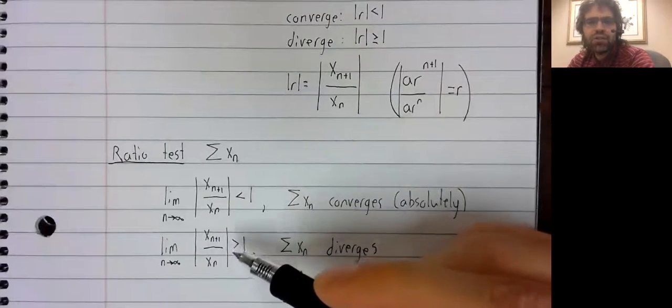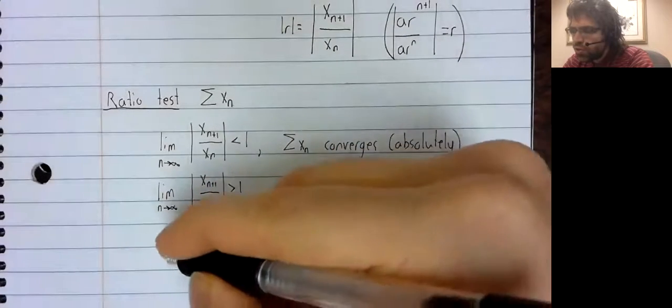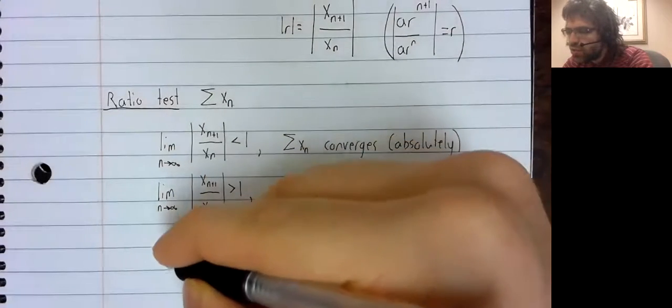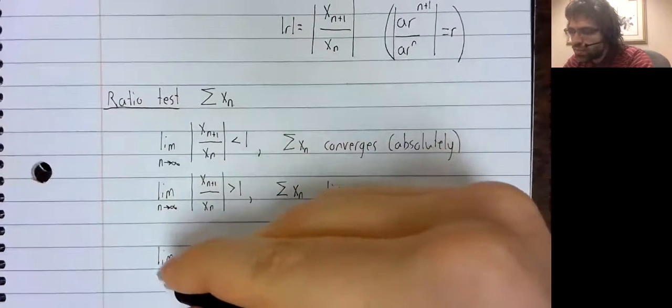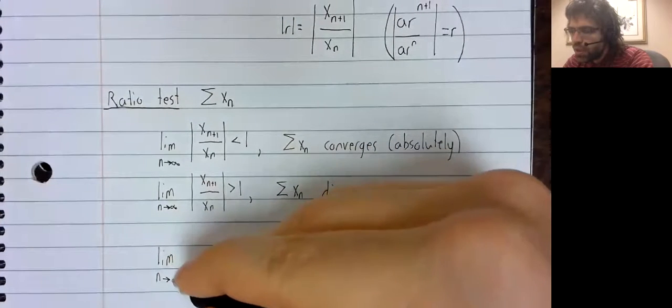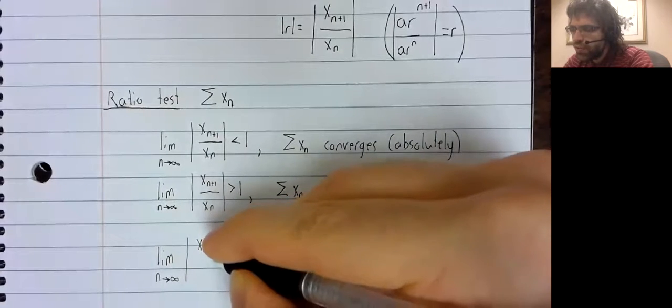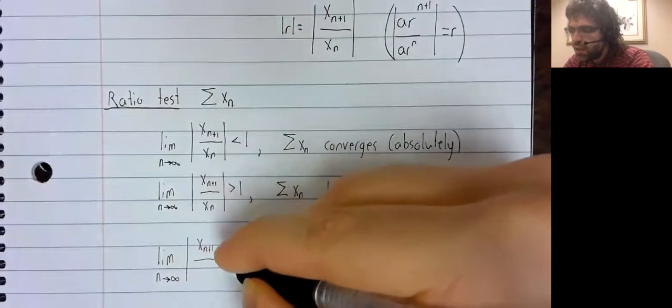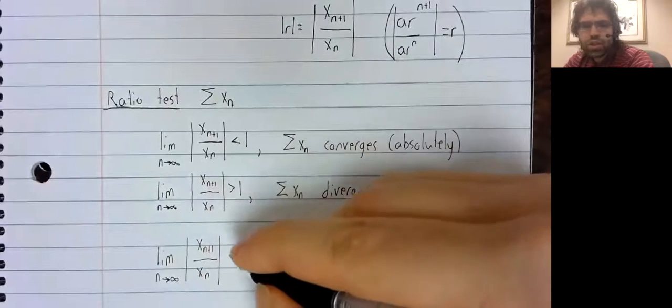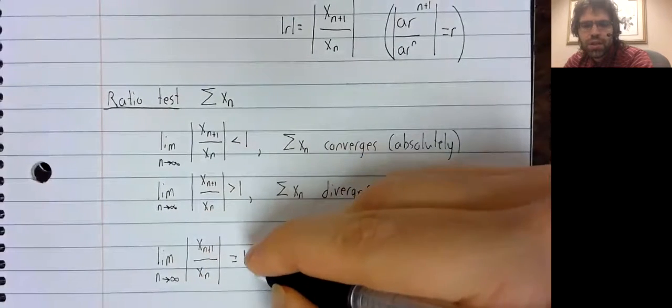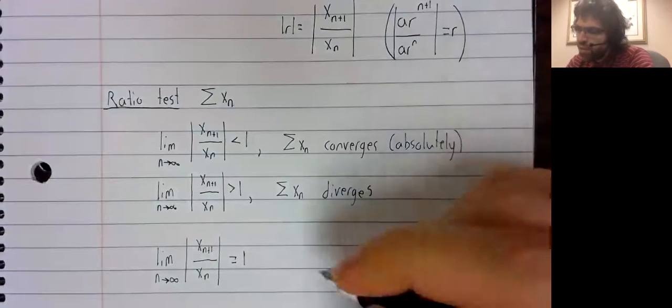So there's still a case we need to look at. What if the limit as N goes to infinity of the absolute value of this ratio equals one?